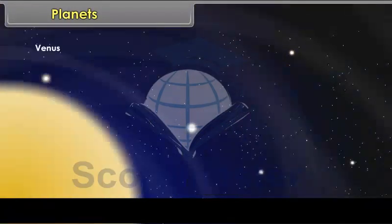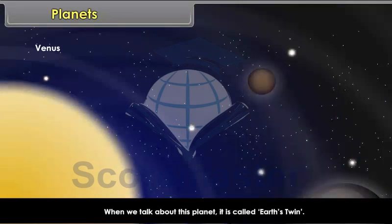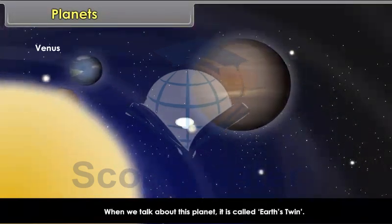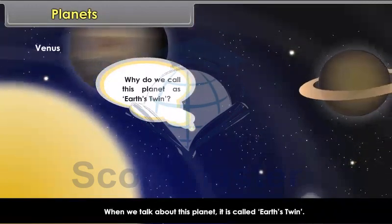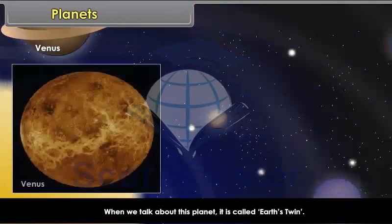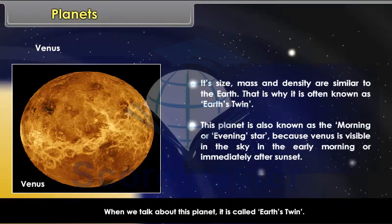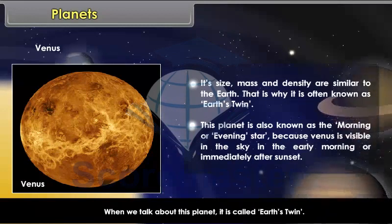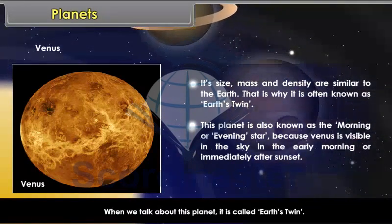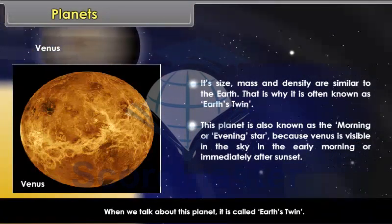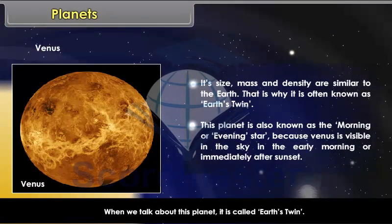Venus. When we talk about this planet, it is called Earth's twin. Why do we call this planet as Earth's twin? Its size, mass and density are similar to the Earth. That is why it is often known as Earth's twin. This planet is also known as the morning or evening star because Venus is visible in the sky in the early morning or immediately after sunset.